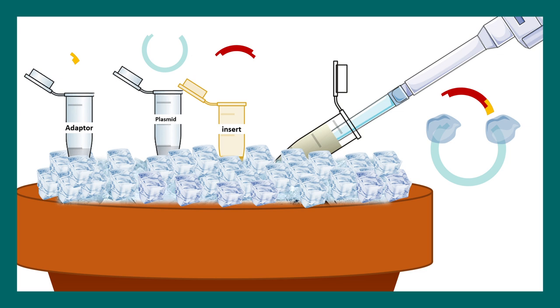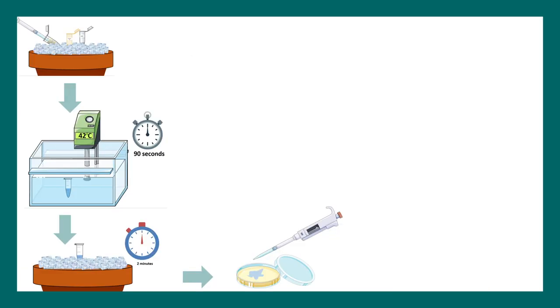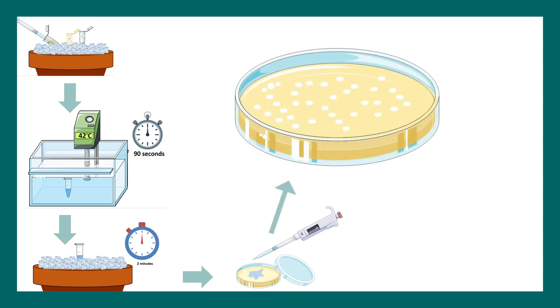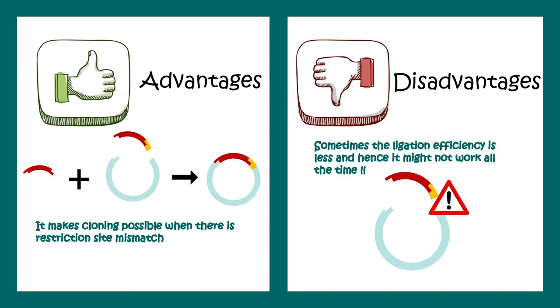That would ensure proper and successful cloning. After that, things are very simple - we perform the classical transformation experiment and next day, if we're lucky, we would see the colonies.